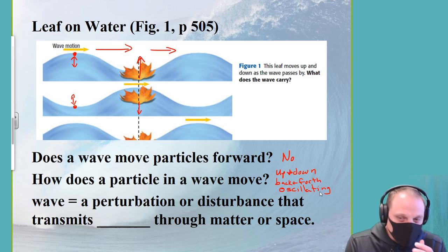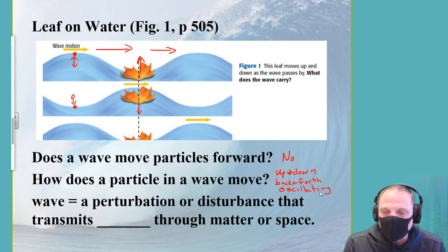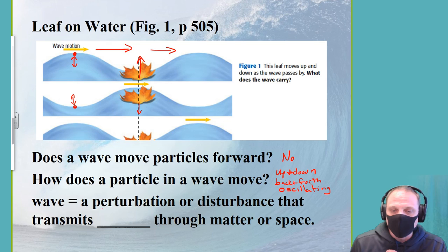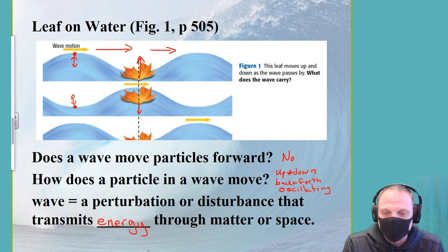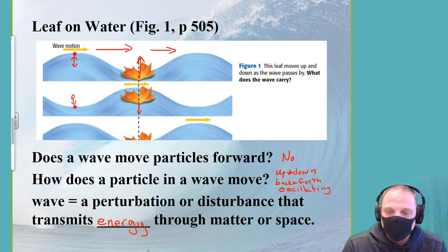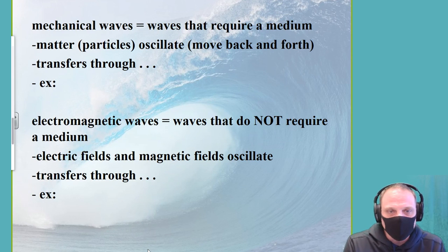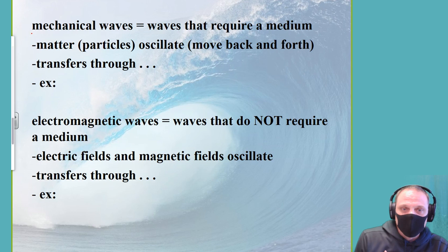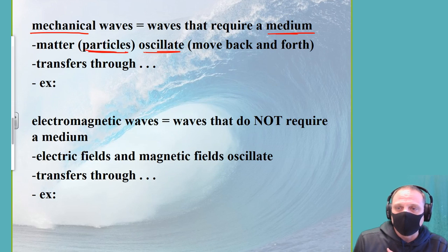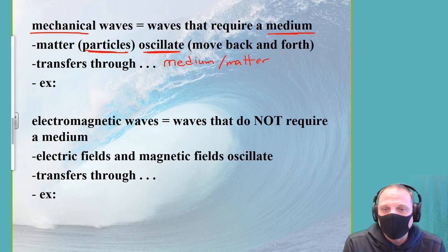A wave is defined as a perturbation or disturbance that transmits energy through matter or space. 'Perturbation' is just another word for disturbance. So we have to think about what can move through matter and what can move through space — that's what we're dealing with when we talk about mechanical waves versus electromagnetic waves. A mechanical wave requires a medium — some sort of matter — for energy to transfer through.